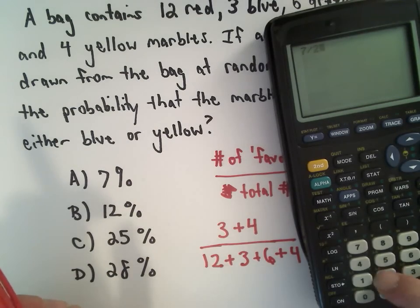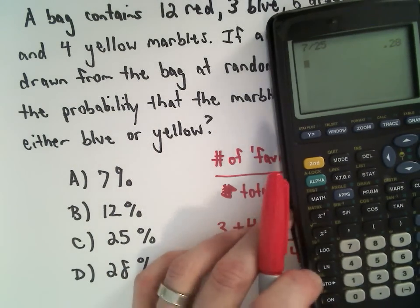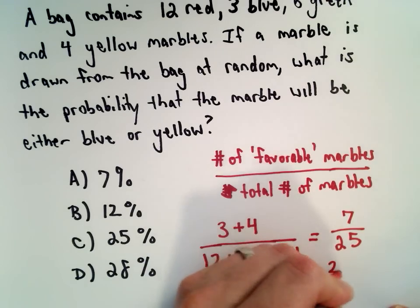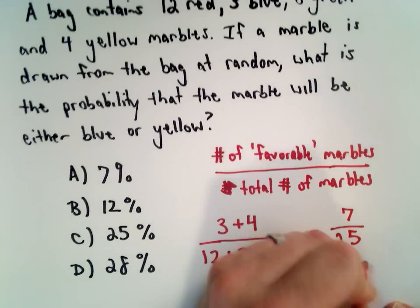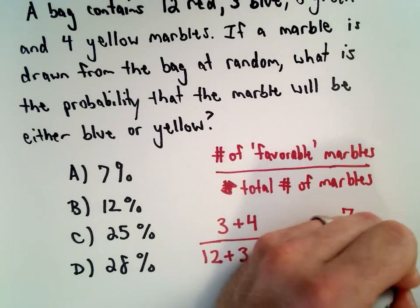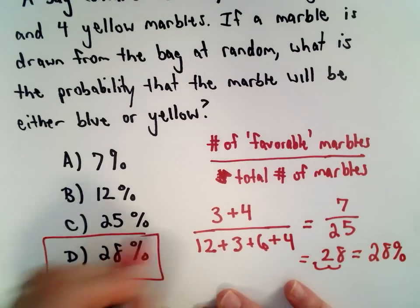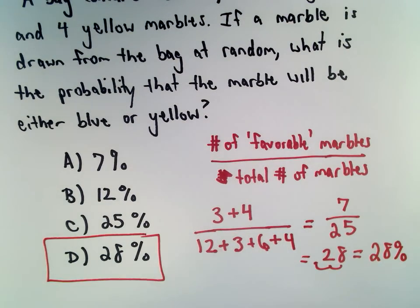7 divided by 25 equals 0.28. If we move the decimal place two places to the right, that gives us 28%. So answer choice D is our correct solution.